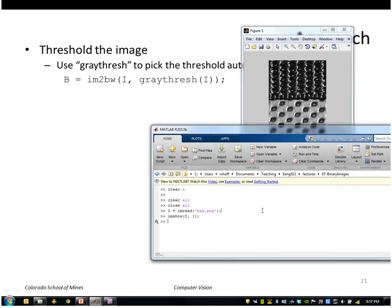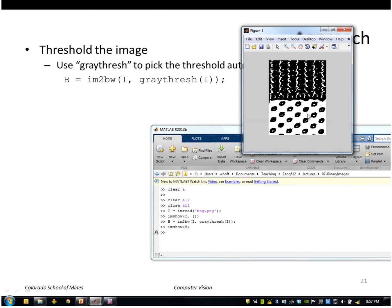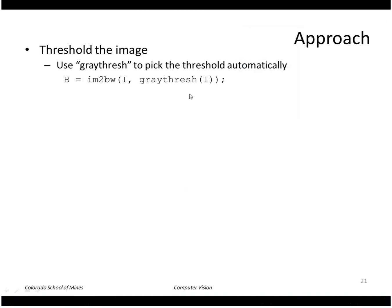We'll threshold it automatically using graythresh. So that looks like this. So you can see that we have black where we really want white. So I want to complement the binary image to make the target regions white.